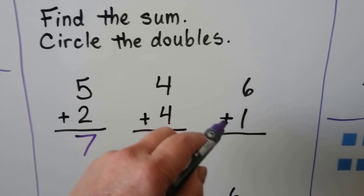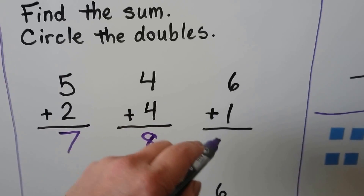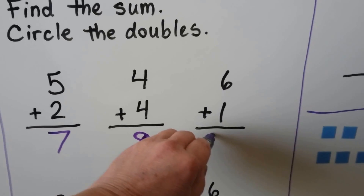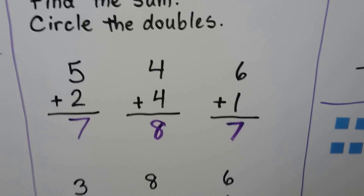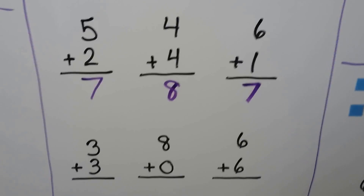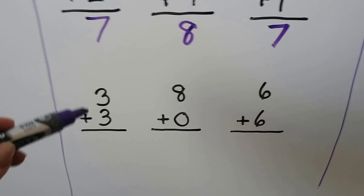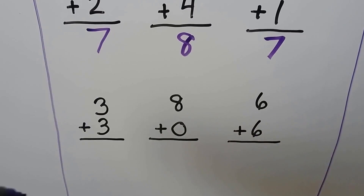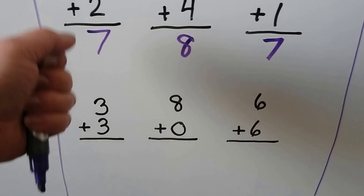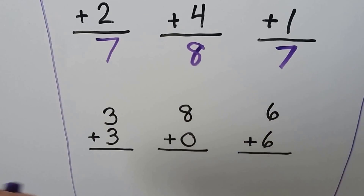6 plus 1 is 7. It's easy to add 1, isn't it? 3 plus 3: we start with the 3 and count on 3 — 4, 5, 6.